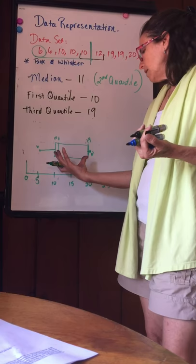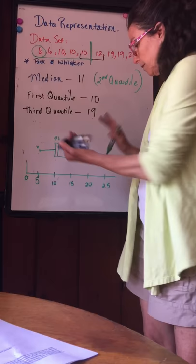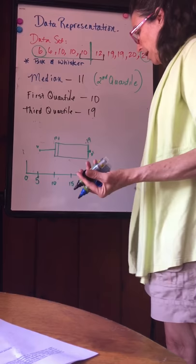There you go. This is a box and whisker plot and it shows the grouping of the middle portion of your data. So that's it. Lovely box and whisker.